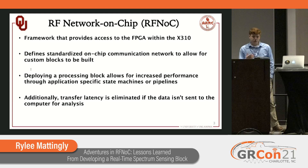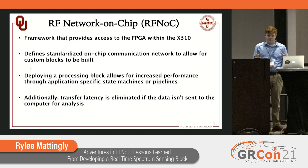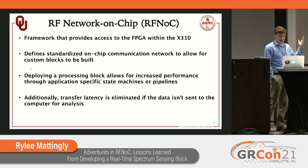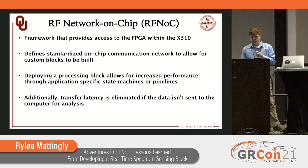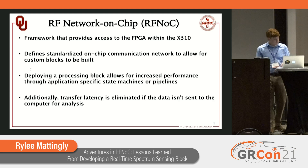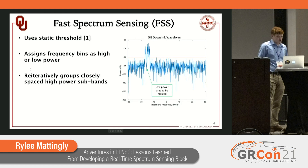Additionally, if you have a critical path that is well suited for FPGA, you can remove the host PC completely out of the loop. So maybe we have a spectrum sensing block that determines where the available spectrum is, and then we can use an on-device FPGA block to generate that signal — keeping it all closed loop, just jumping from RFNOC block to RFNOC block.